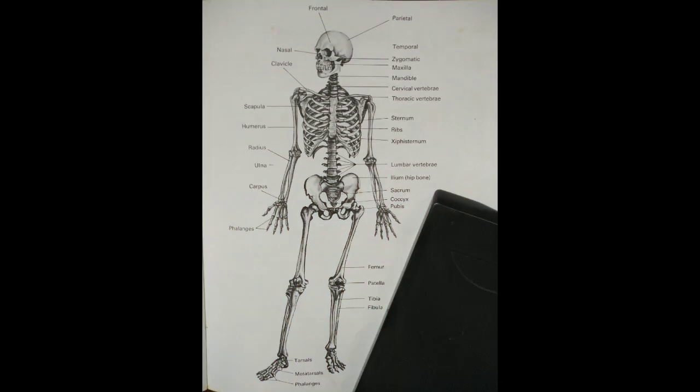The skeleton provides the human body with support and protection of delicate internal organs. The central axial skeleton, or spine, supports the skull, arms and legs. The bones themselves are made of minerals and a special fibrous protein which is called collagen.